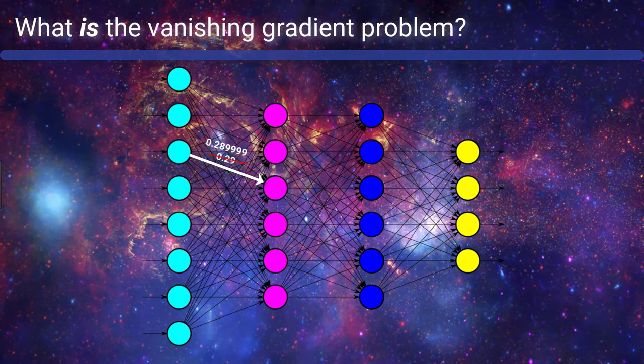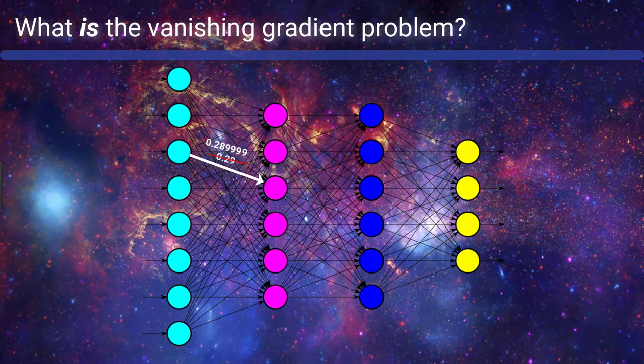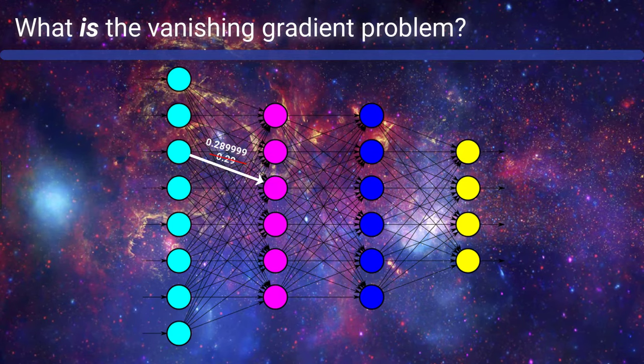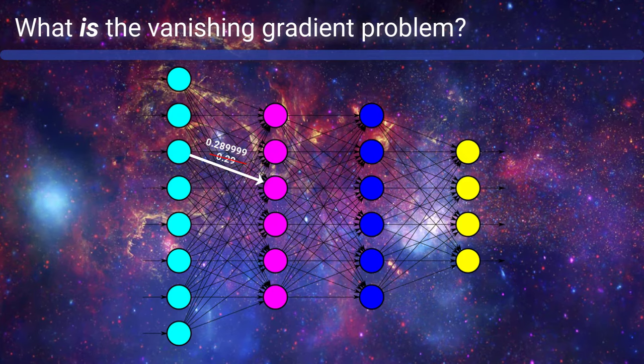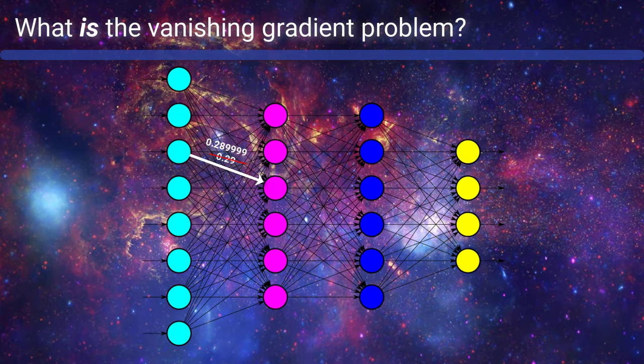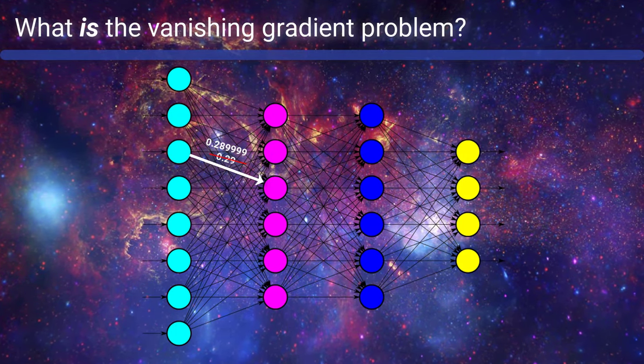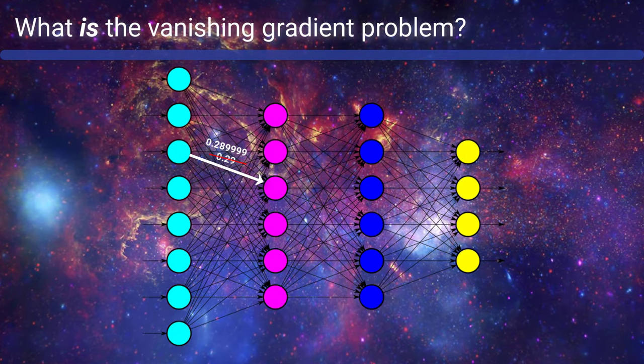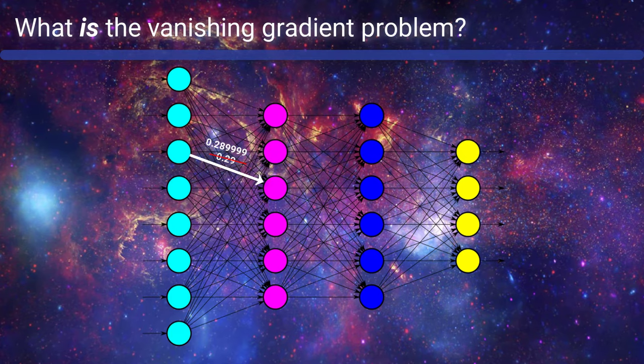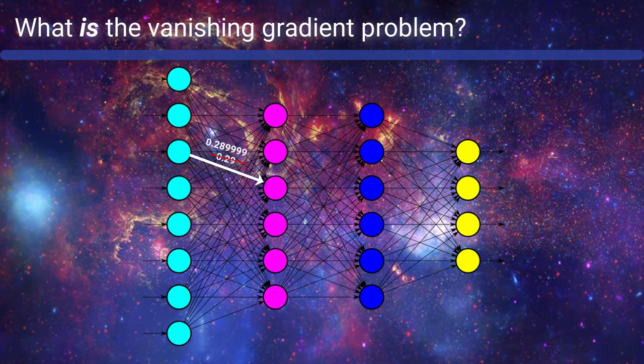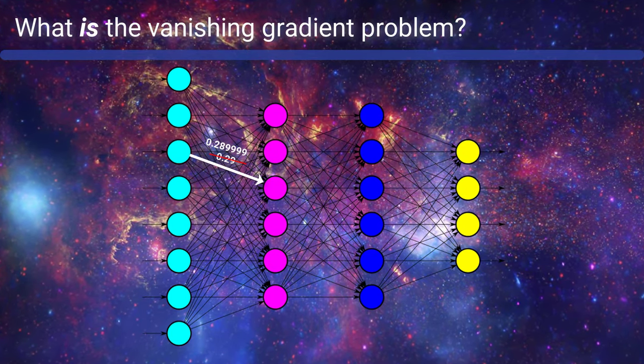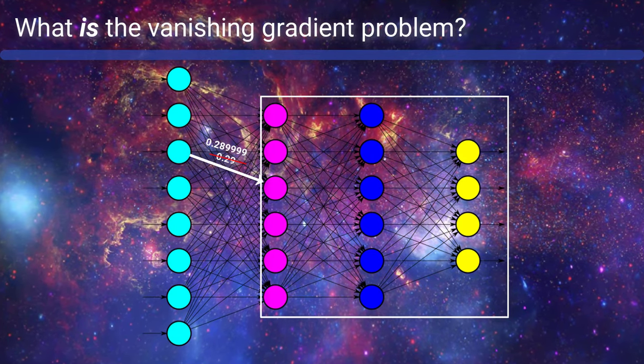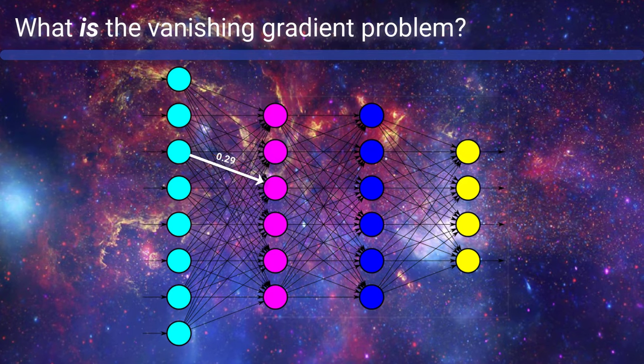So if this new updated value of the weight has just barely moved from its original value, then it's not really doing much for the network. This change is not going to carry through the network very well to help reduce the loss because it's barely changed at all from where it was before the update occurred. Therefore, this weight becomes kind of stuck, never really updating enough to even get close to its optimal value, which has implications for the remainder of the network to the right of this one weight and impairs the ability of the network to learn.